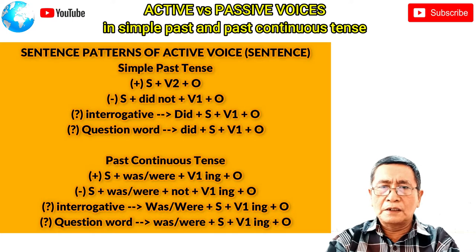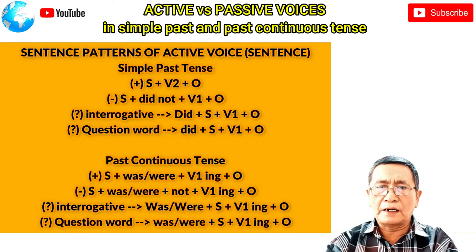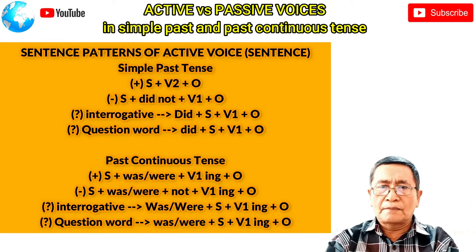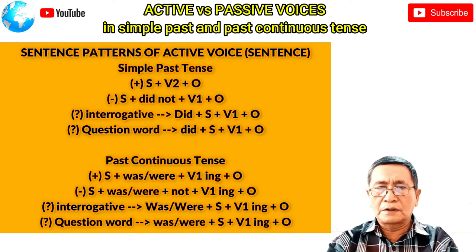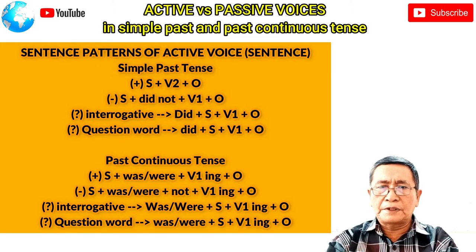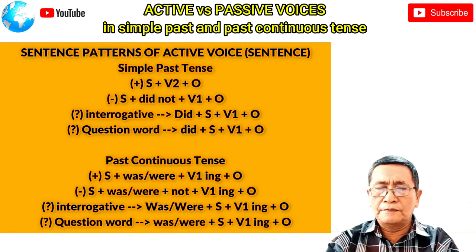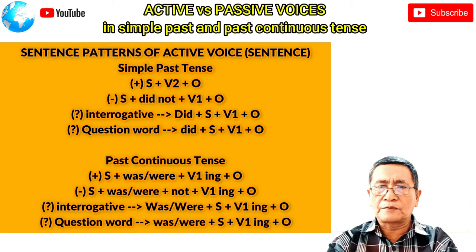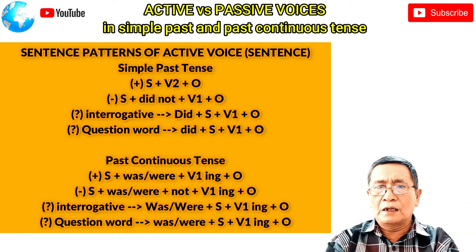For the active voice in past continuous tense: positive — subject + was/were + verb 1 + ing + object; negative — subject + was/were + not + verb 1 + ing + object; interrogative — was/were + subject + verb 1 + ing + object. For questions, put the question word first — when, what time, where, etc. — followed by was/were + subject + verb + ing + object.